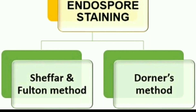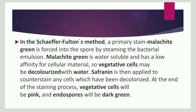There are two methods of endospore staining. The first is the Schaeffer-Fulton method, and the second is Dorner's method.